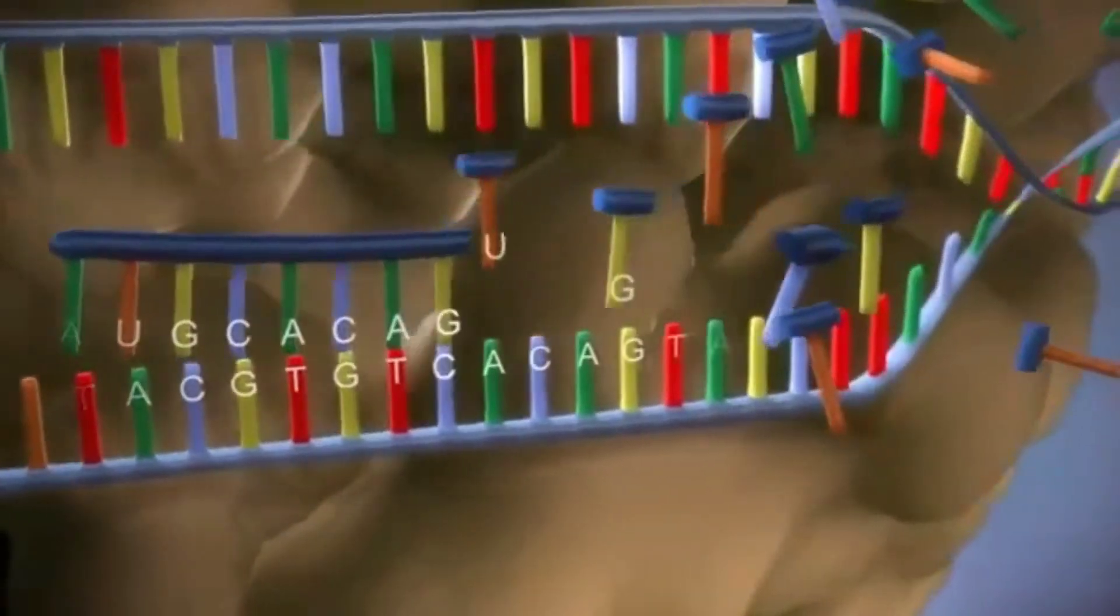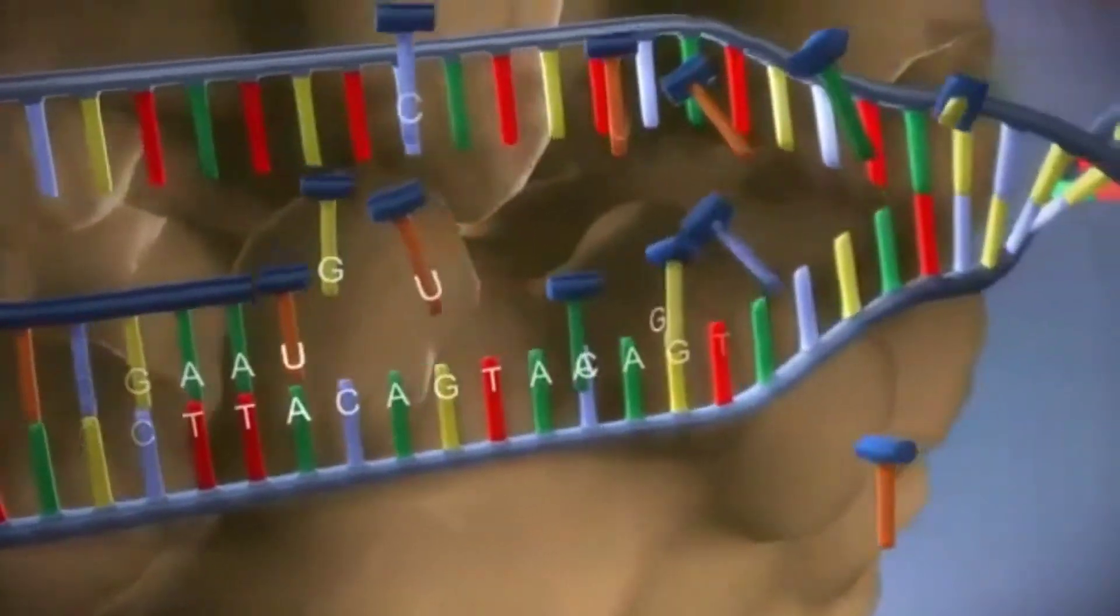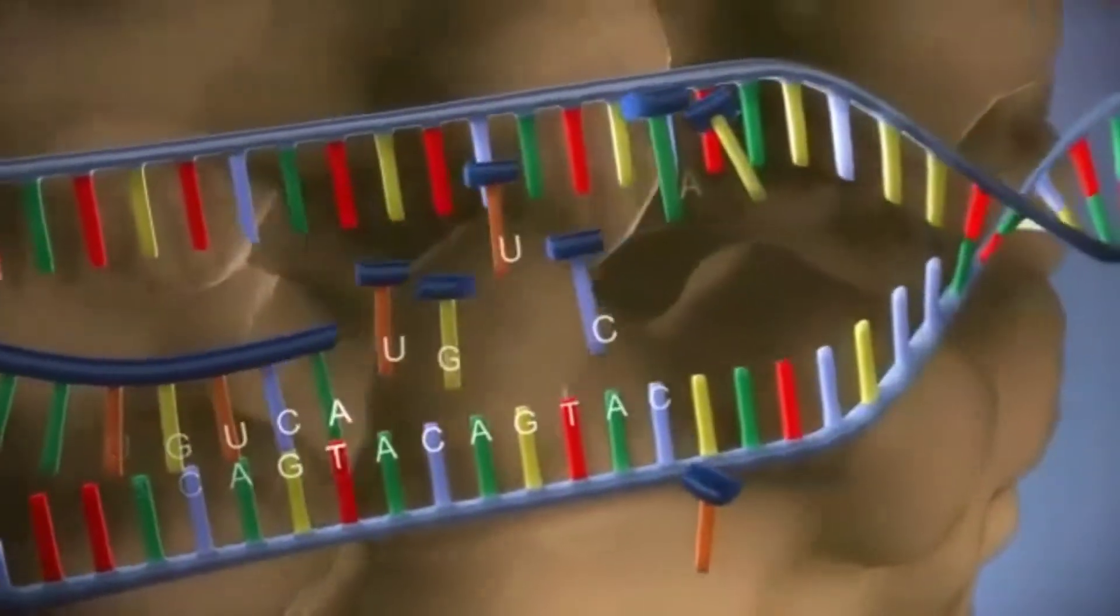The DNA code determines the order in which the free bases are added to the messenger RNA. This process is called transcription.